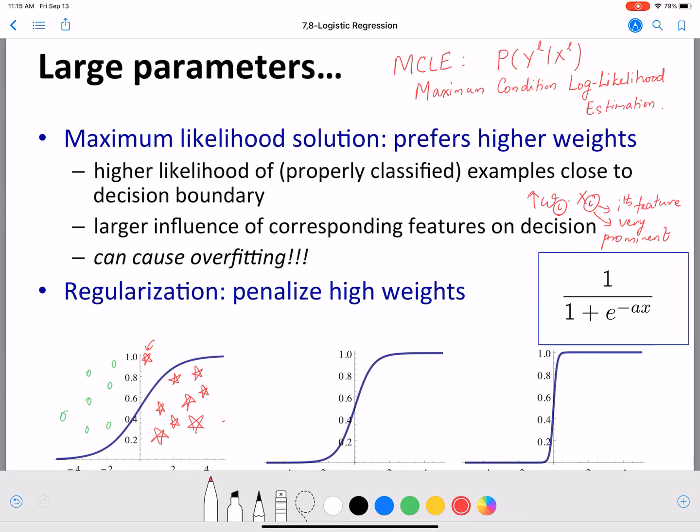When it tries to optimize for this point and tries to fit it, then the weights will become high. What would result is the model on the extreme right here, where this model would try really hard, harder than required, to fit this point close to the edge, resulting in really high weights. This is an example of a model learned when the weights are high.